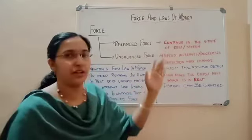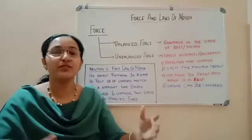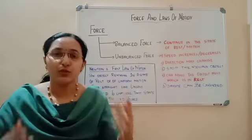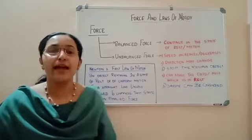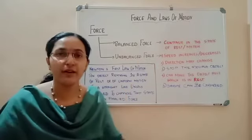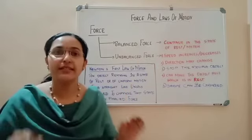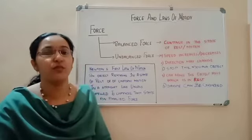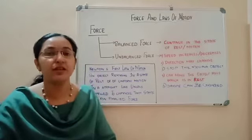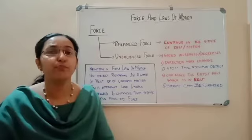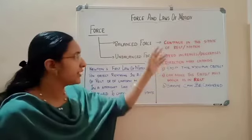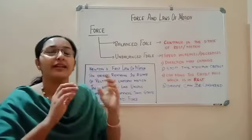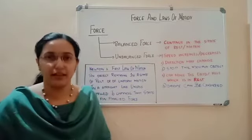In the case of rest, consider a tug of war. The two teams are applying the same force on both sides of the rope, and the rope remains at rest. This means the forces are balanced — all the forces applying are balanced, and the object continues in the state of rest.